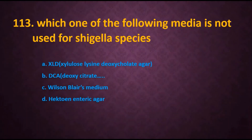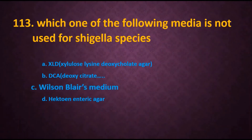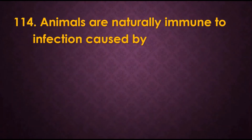Question 113: Which of the following media is not used for Shigella species? Options are: A) XLD (Xylose Lysine Deoxycholate agar), B) DCA (Deoxycholate Citrate Agar), C) Wilson Blair's medium, D) Hektoen Enteric agar. The answer is Wilson Blair's medium — it is not used for the cultivation of Shigella species, whereas the rest are used for its cultivation.